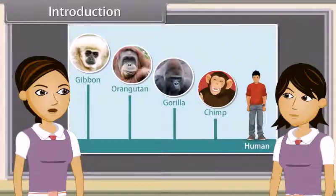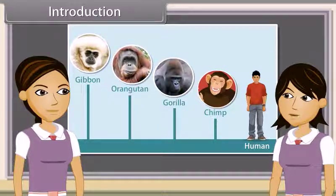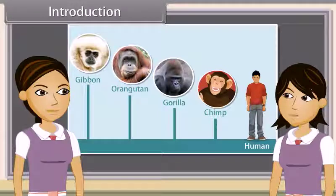Hey Sunita, look at this chart. What can you observe from this chart? It depicts that human, chimpanzee, gorilla and other two animals possess some similarities and differences.